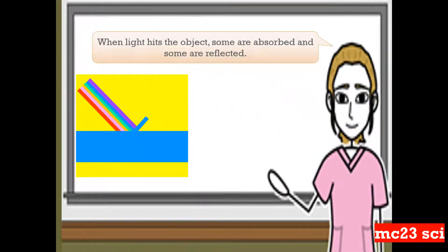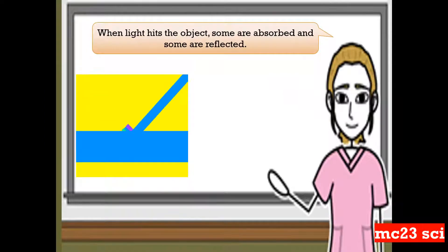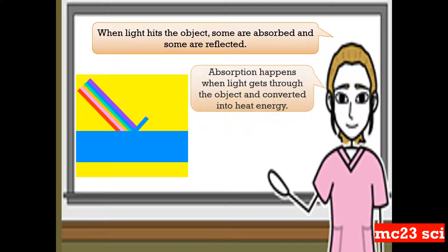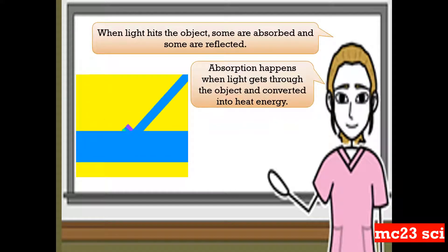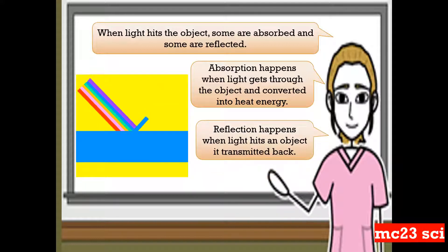Take a look at the picture. When light hits the object, some are absorbed and some are reflected. Absorption happens when light gets through the object and converted into heat energy. And reflection happens when light hits an object it transmitted back.